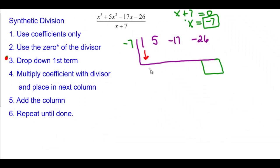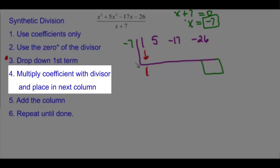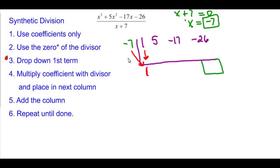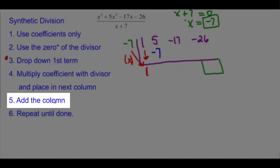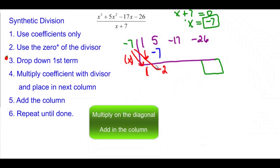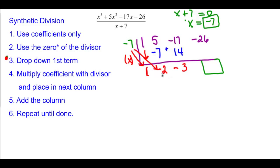And then it says multiply the coefficient of the divisor and place it in the next column. So in other words, on this diagonal here, we want to multiply. So 1 times negative 7 is going to give me negative 7. Now it says add the column. The 5 plus a negative 7 is going to be negative 2. And again, we're going to multiply when we go this way. Negative 7 times negative 2 is going to give us a positive 14. And then we add, so when we add there, we get a negative 3. And then we take negative 3 times negative 7, and we get a positive 21. And if we add negative 26 and positive 21, we get a negative 5 remainder.